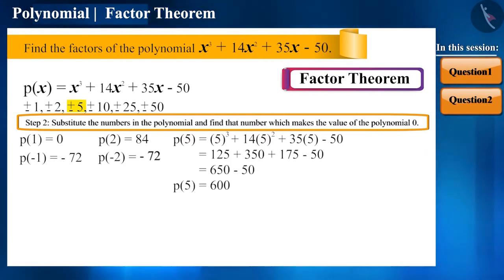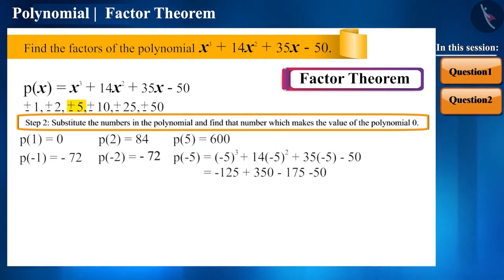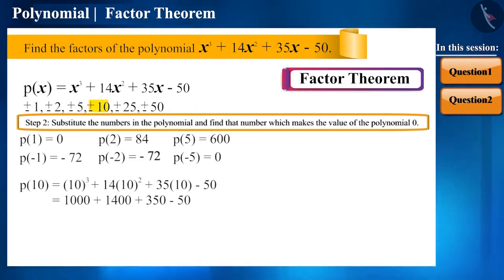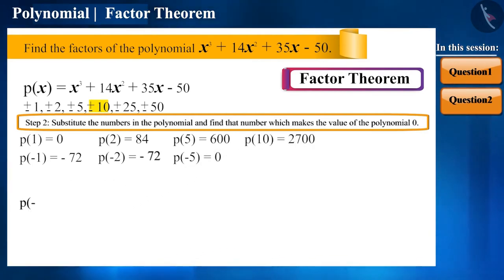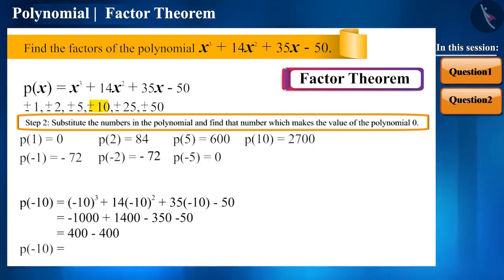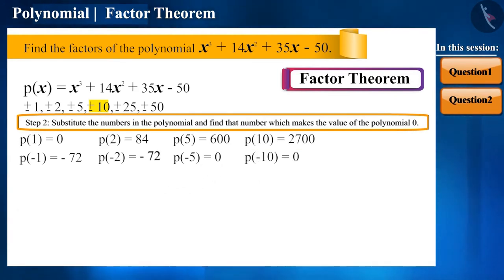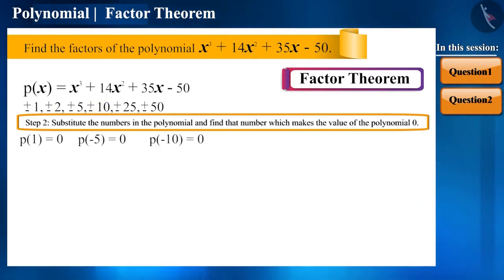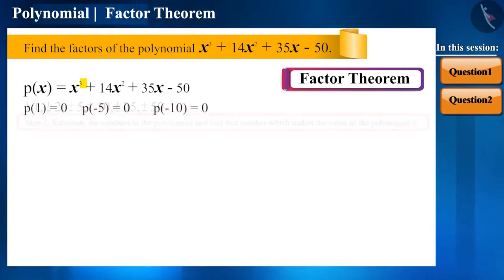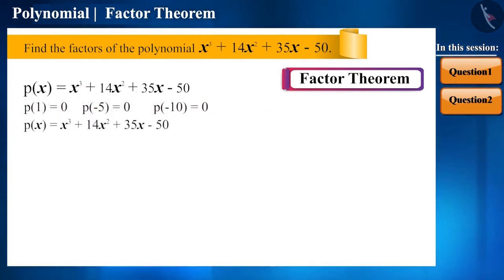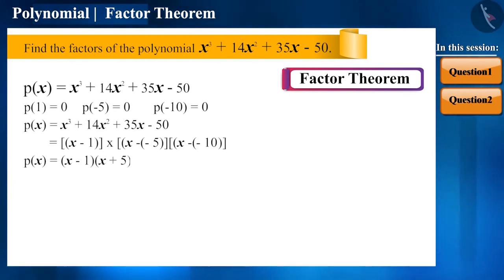P of 5 is 600, p of minus 5 is 0, p of 10 is 2700, and p of minus 10 is equal to 0. Here, for the cubic power of x, we get three zeros. And since this is a cubic polynomial, there will not be any more zeros. And now, we can represent this polynomial in terms of its factors. P of x is equal to x minus 1, x plus 5, x plus 10.